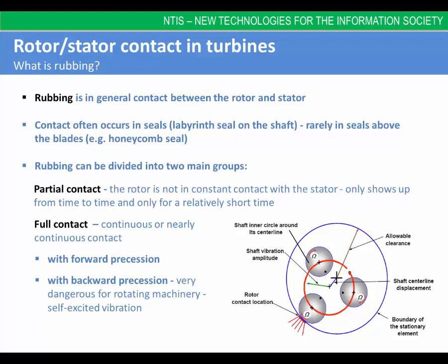This rubbing can be divided into two main groups: the so-called partial contact, where the rotor is not in constant contact with the stator and appears only for a relatively short time, and the second type is the full analog wrap, characterized by continuous contact of the rotor and stator. This type is further divided by precession into full wrap with forward precession, also known as dry whirl, and full wrap with backward precession, the so-called dry whip. Dry whip is very dangerous for rotating machinery because of its self-excited vibrations.